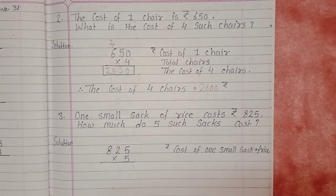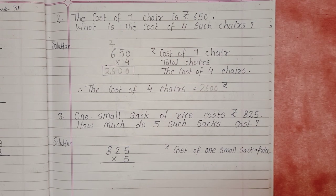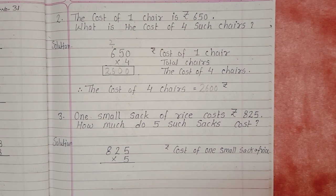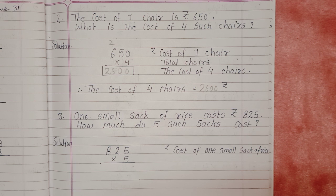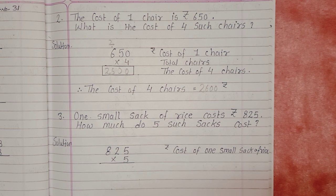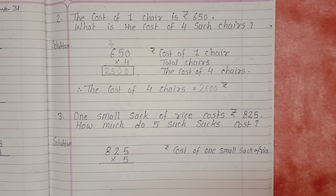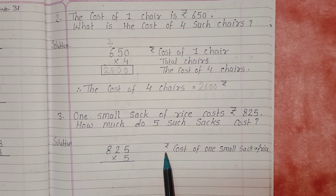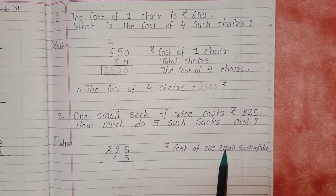Next we'll do the next word problem. First I'll read the question. One small sack of rice costs Rs. 825. How much do 5 such sacks cost? We'll start the solution. Rs. 825 is the cost of one small sack of rice.